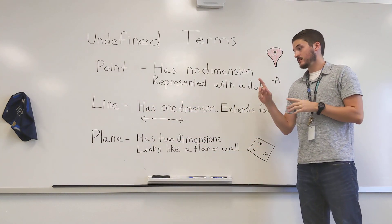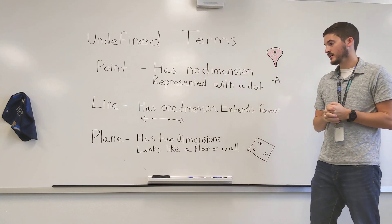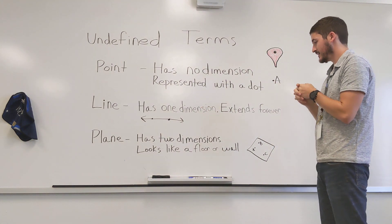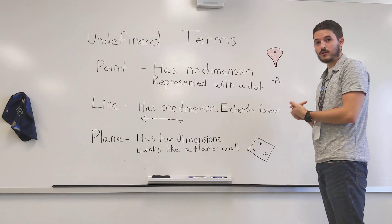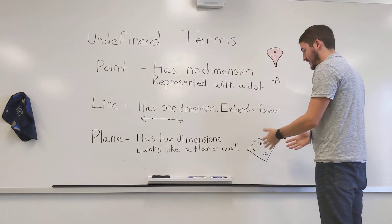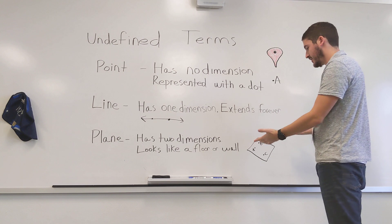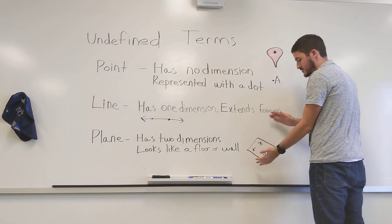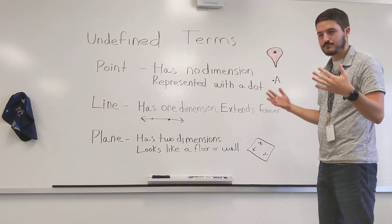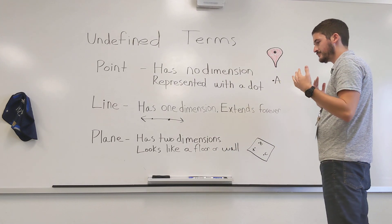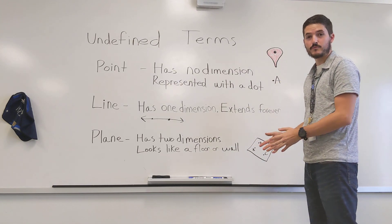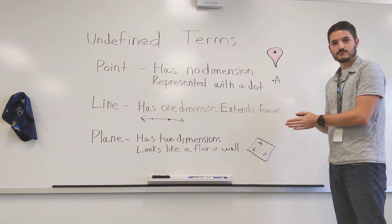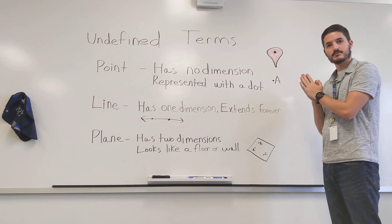The last thing we talked about are planes. Planes have two dimensions — they look like a floor or wall. Not airplanes, but flat spaces. In your books, a lot of times you'll see just a flat piece of paper, a rectangle, that usually has multiple points on it. That's what we consider in geometry to be planes.